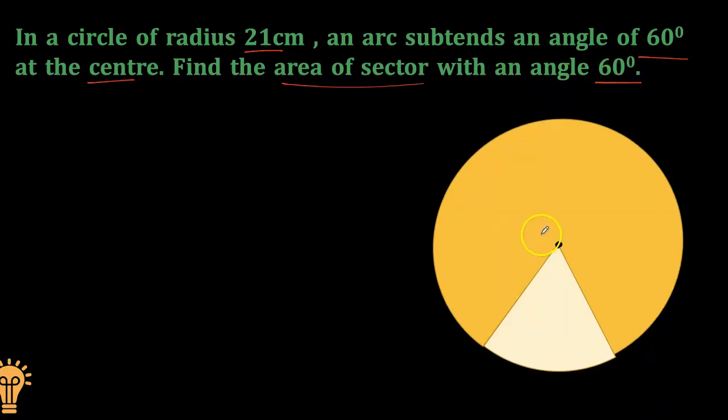So here the circle with the center O, the radius we can call it OA and OB. The radius is given here: 21 centimeters.